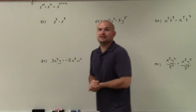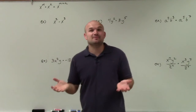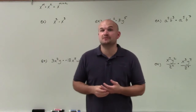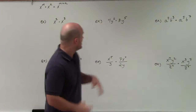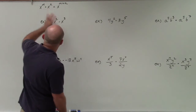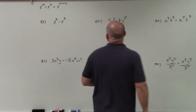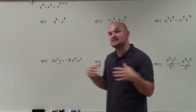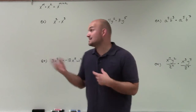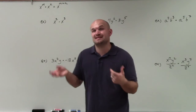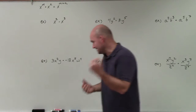Welcome, ladies and gentlemen. What I'd like to do is show you how to simplify an expression by applying the product rule of exponents. I wrote up the product rule right here: x to the m times x to the n equals x to the m plus n. Basically, when we're multiplying two exponents, as long as the base is the same, all we need to do to simplify is add the powers.